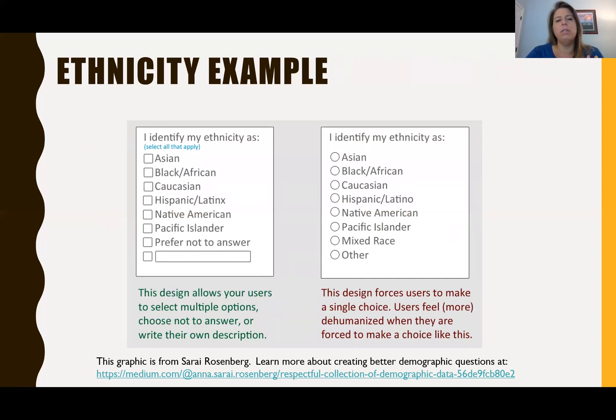So for ethnicity, in terms of some examples of ethnicity and why we allow people to select all that apply versus just picking a box, is that allowing them to self-select and where they can choose not to answer or they can even write in their own description, it allows people to feel heard and to feel like they matter and that who they are is a part of what your research is and what you're trying to understand. If we just put them into a box, then we're not totally hearing people. We just force them to have a single voice and they feel dehumanized when they're forced to make a choice like this.